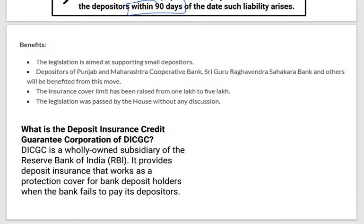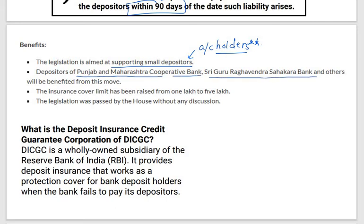The benefits of this amendment bill: the legislation is aimed at supporting small depositors — those who are account holders with little money will benefit from this amendment. Depositors of Punjab and Maharashtra Cooperative Bank, Shri Guru Raghavendra Sahakar Bank, and others will be benefited from this move. The insurance cover limit has been raised from 1 lakh to 5 lakh. However, the legislation was passed by the house without any discussion.